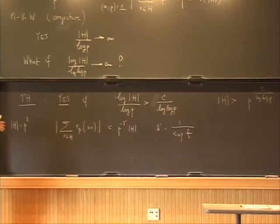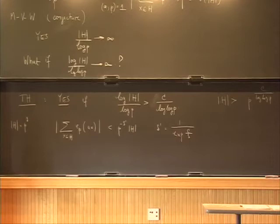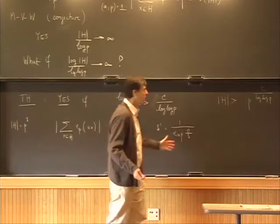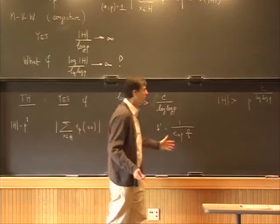Problem one: try to improve on this. This result comes from arithmetic combinatorics — in fact from a much more general thing which I will tell you in a moment. That seems to be the limit of these methods. Any kind of improvement beyond that will really require a new idea which will be a real breakthrough. So if you can improve on that, you'll be very impressive.